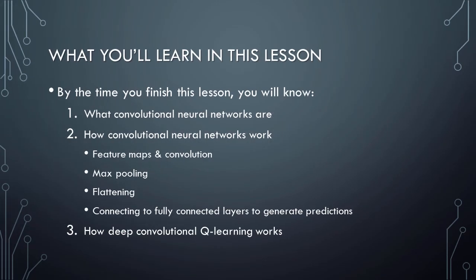Before we begin discussing convolutional neural networks and deep convolutional Q-Learning, let's briefly review what you'll learn in this lesson. By the time you have finished this video, you will know what convolutional neural networks are, how they work — including a discussion of feature maps and convolution, max pooling, flattening, and connecting to fully connected layers to generate predictions. Finally, we'll discuss how deep convolutional Q-Learning works, and we'll be able to build CNNs that can perform tasks such as identifying objects in images or playing video games at a level that exceeds human capabilities.